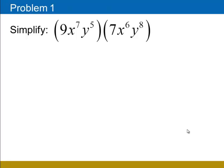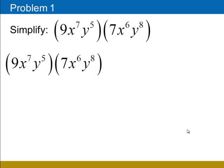The first problem is to simplify 9x to the 7th, y to the 5th, times 7x to the 6th, y to the 8th. The important thing to remember here is that we treat coefficients differently than we treat exponents. The exponent rules tell us that we add exponents for the like bases, but the coefficients must be multiplied. We're going to multiply the coefficients 9 and 7, but for x we'll add the exponents 7 and 6, and for y we'll add the exponents 5 and 8.